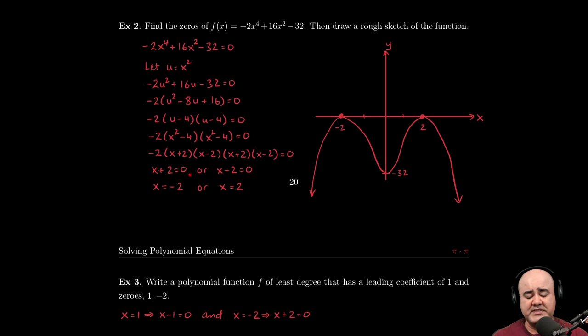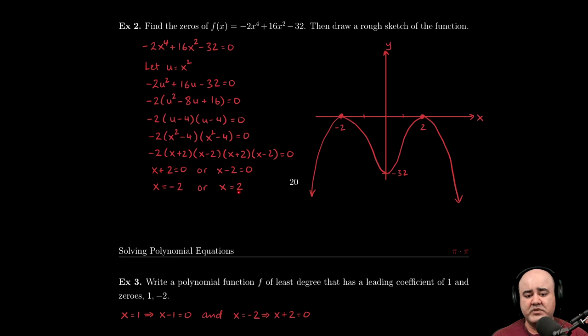So if x plus two equals zero, you get x equals negative two. And if x minus two equals zero, we get x equals positive two.